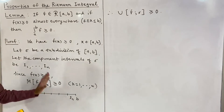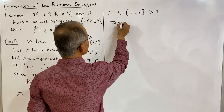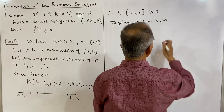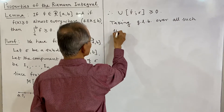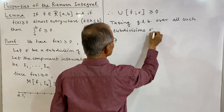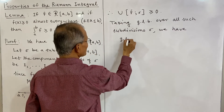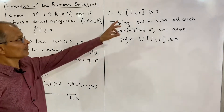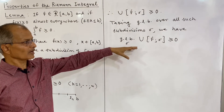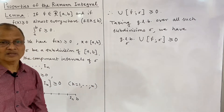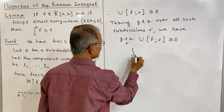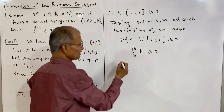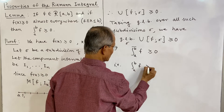Taking the greatest lower bound over all subdivisions sigma, we consider the infimum over all sigma of the upper sum of f on sigma, and that will also be greater than or equal to 0, because each upper sum is ≥ 0. The greatest lower bound of the upper sum is also ≥ 0. By definition, this is the upper integral — that is the upper integral of f from a to b — and that is ≥ 0. Since f is Riemann integrable, its upper integral equals the integral of f, which is therefore ≥ 0.